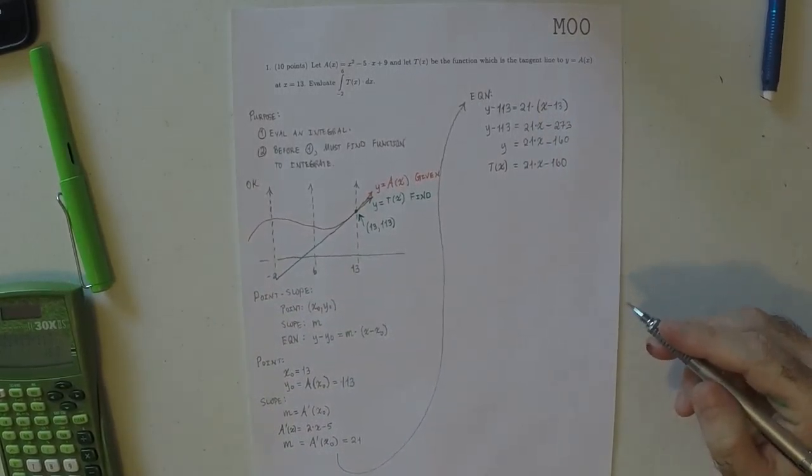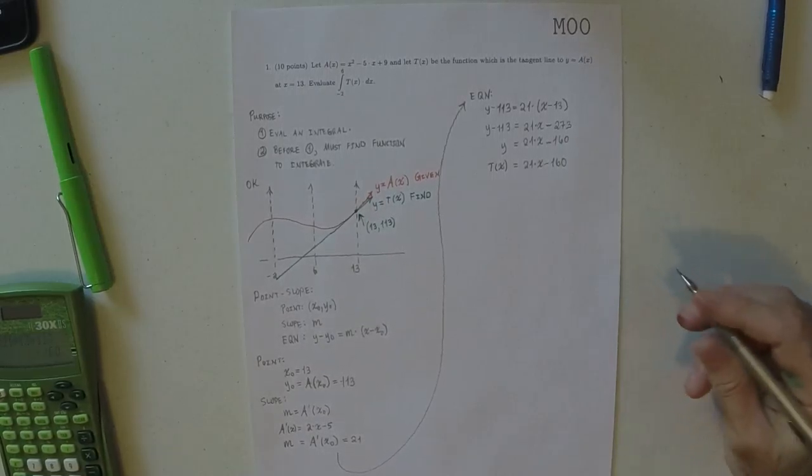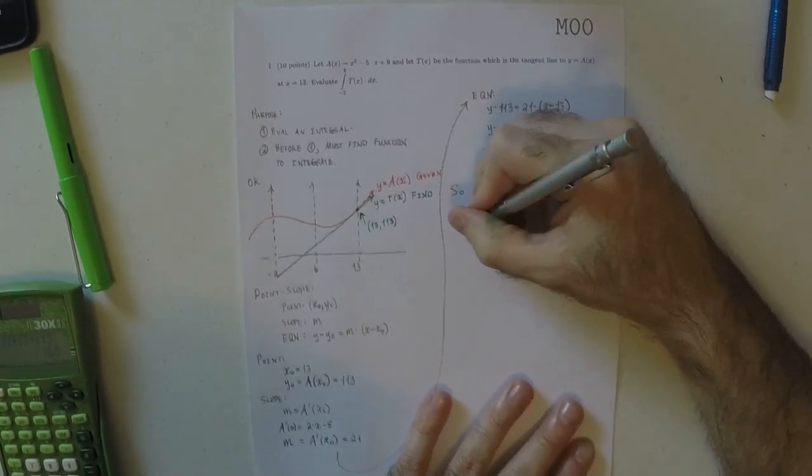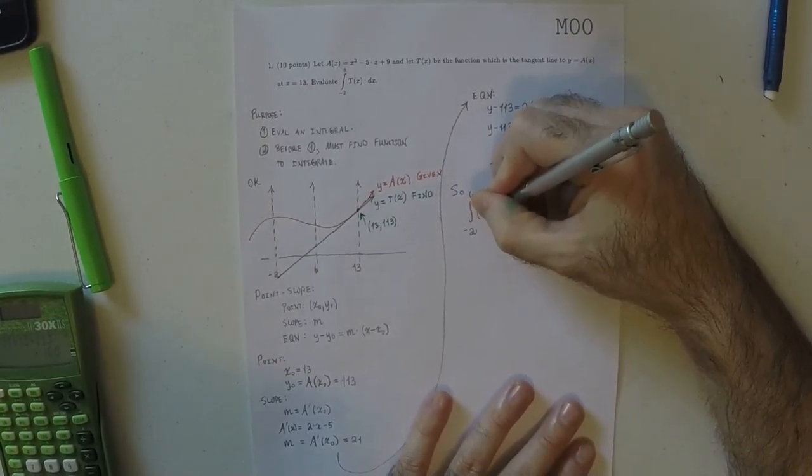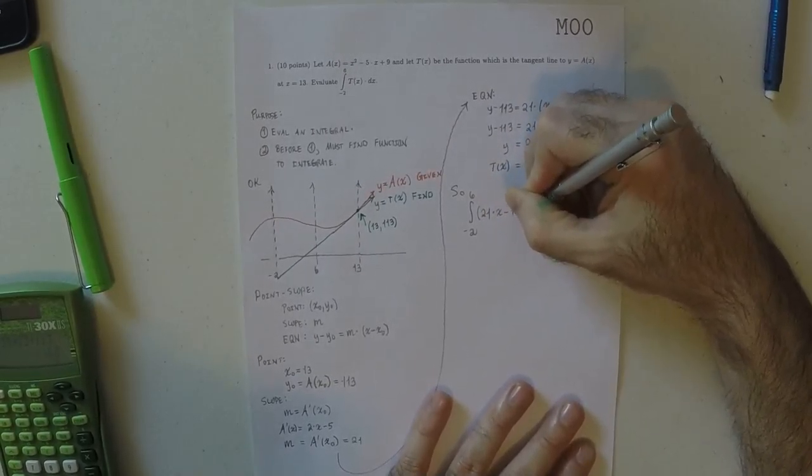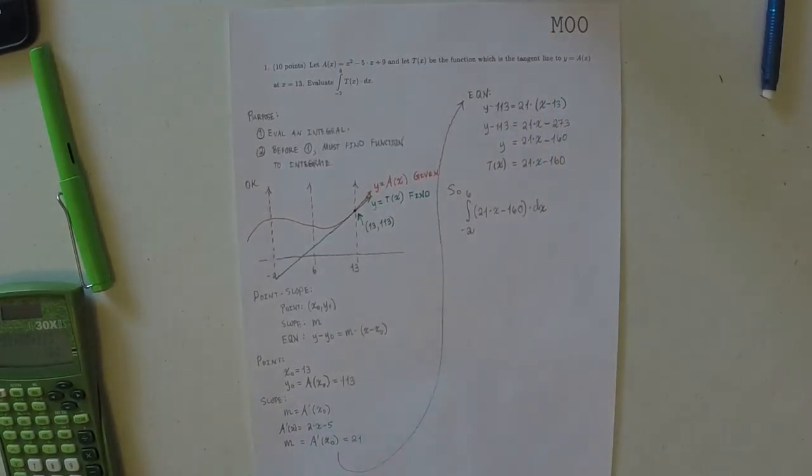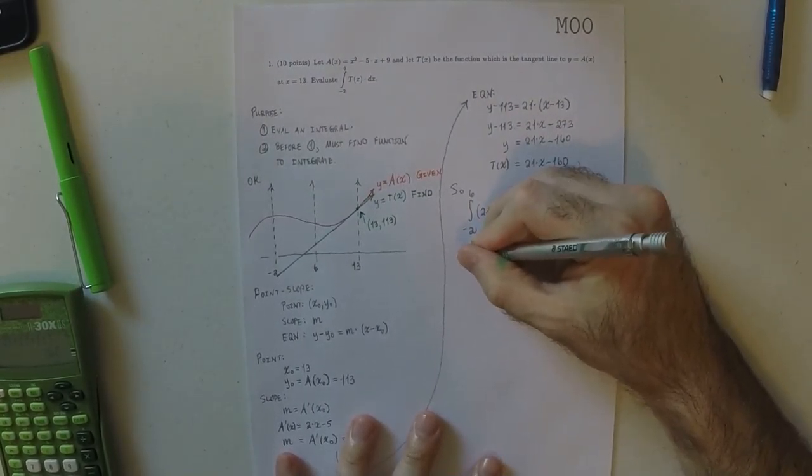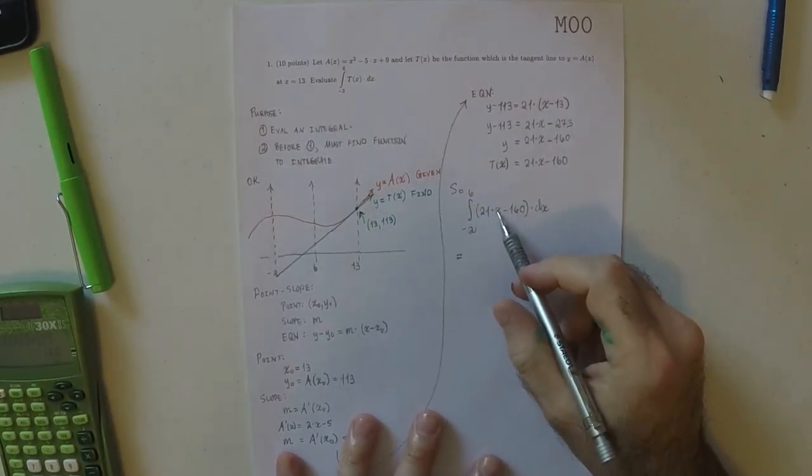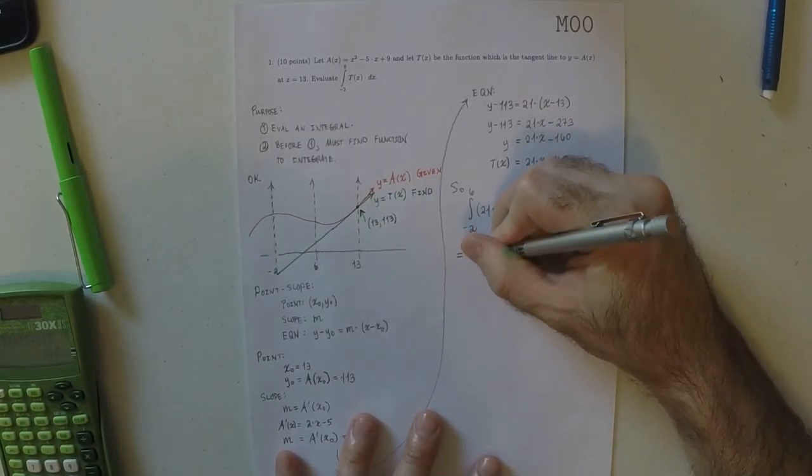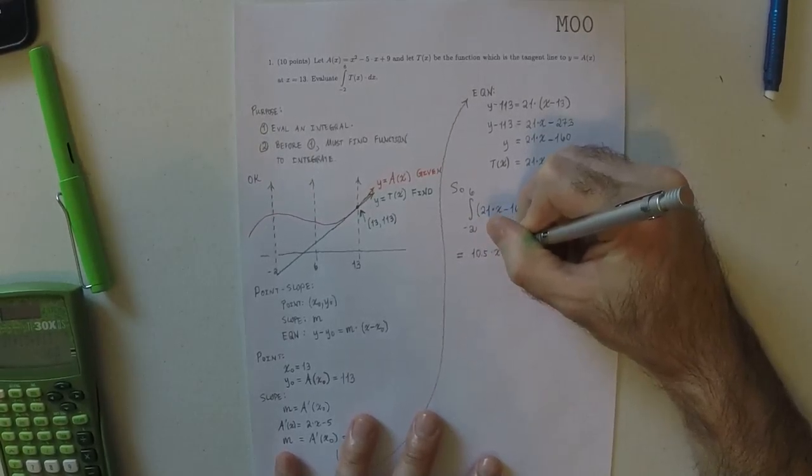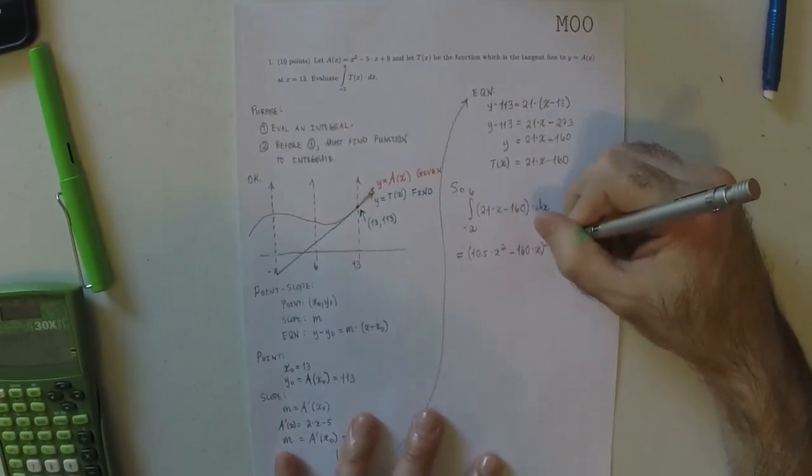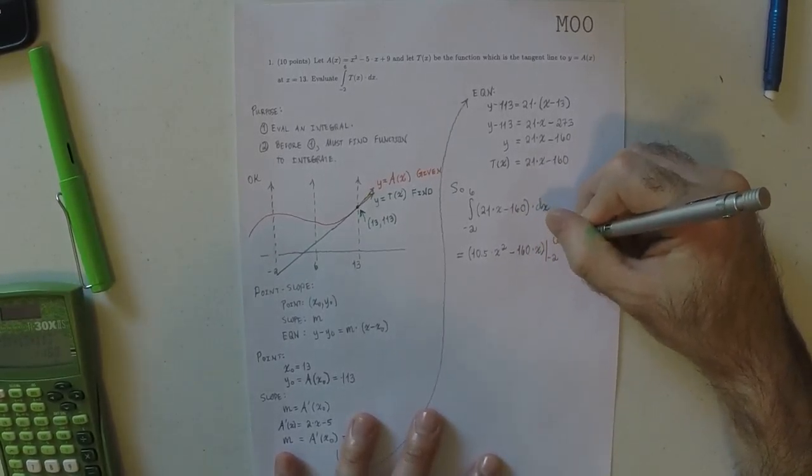So that's the function that we're going to actually integrate. All right. So the integral from negative 2 to 6 of 21x minus 160. Well, we can just use the power rule. So that'd be x squared over 2, and then 21 over 2 is 10 and a half. So that'd be 10 and a half x squared and then subtract 160x, then evaluated from negative 2 to 6.